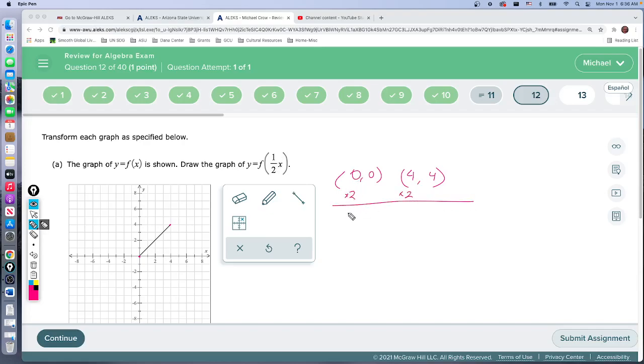So the new coordinates are going to be, well, 0 times 2 is still 0. So that's the nice part of 0, 0. But 4 times 2 is 8. The y values do not change because nothing is happening outside the function. So 0, 0 will stay where it's at. The point that was at 4, 4 now goes to 8, 4.